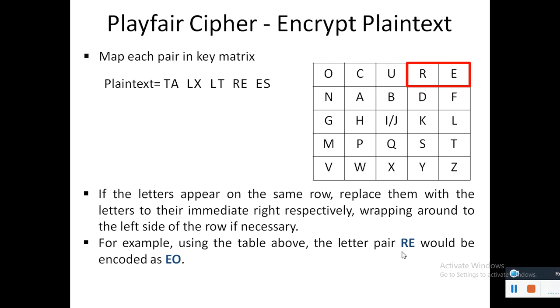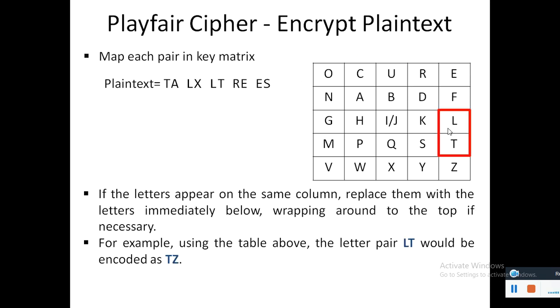The letter next to R and the letter next to E. Similarly, if the pair is L-T which occurs in the same column, then it would be encoded as T-Z, the letter next to T and the letter next to L.